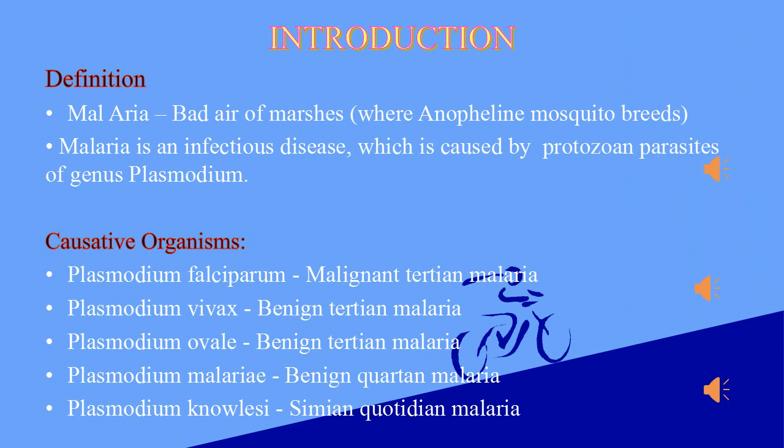Plasmodium falciparum is a malignant tertian malaria. Plasmodium vivax is a benign tertian malaria. Plasmodium ovale is a benign tertian malaria. Plasmodium malariae is a benign quartan malaria. Plasmodium knowlesi is a simian quotidian malaria.